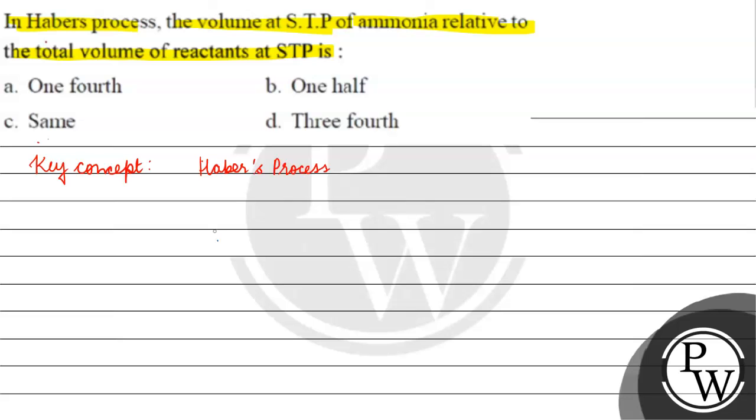What will happen in the question? Haber's process. It is basically a reaction of nitrogen with three moles of hydrogen gas to give us two moles of ammonia gas.